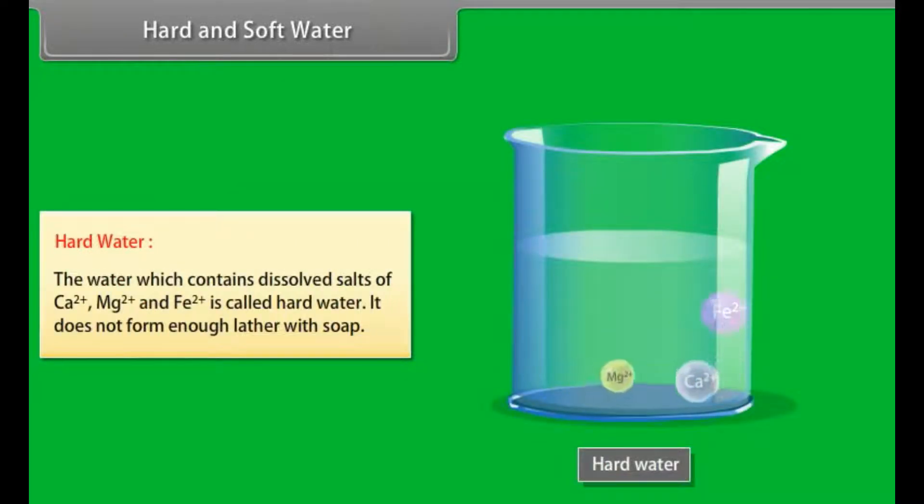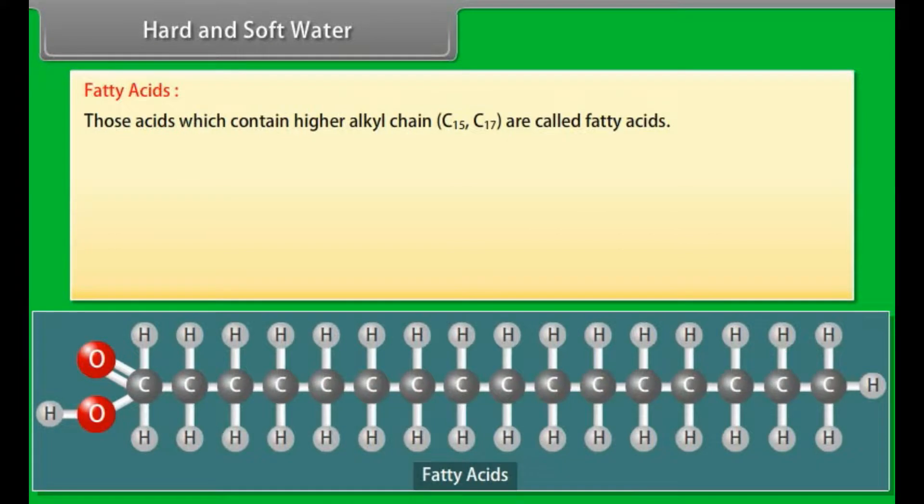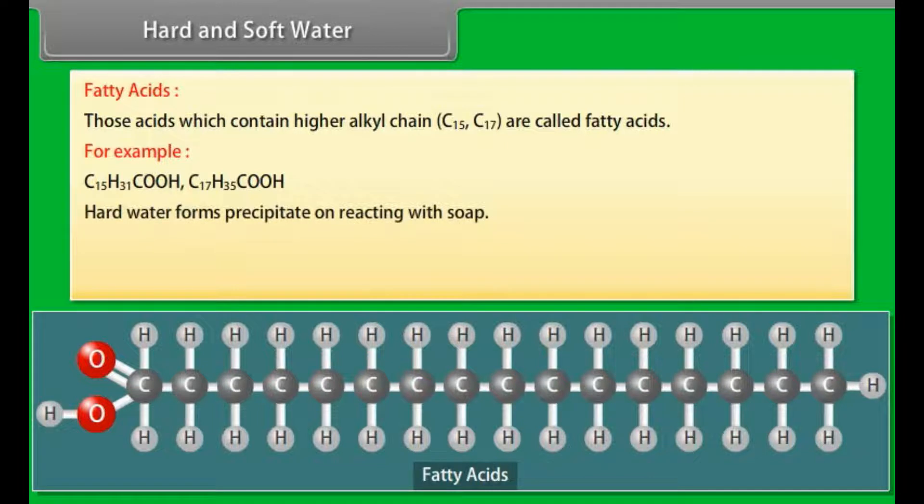Hard and soft water: Hard water contains dissolved salts of Ca2+, Mg2+, and Fe2+. It does not form enough lather with soap. Soft water does not contain dissolved salts of calcium, magnesium, or iron. It forms enough lather with soap. It is free from bicarbonates, sulfates, and chlorides of Ca2+ and Mg2+. Fatty acids are those acids which contain higher alkyl chains. Hard water forms precipitate on reacting with soap.